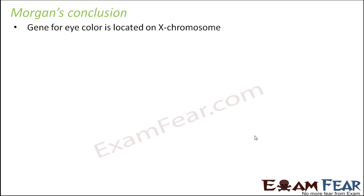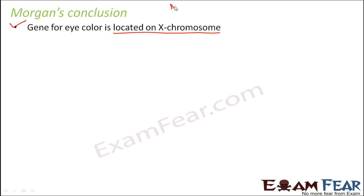Morgan's key conclusion was that the gene for eye color is located on the X chromosome. It was not associated with a particular sex but was related to the sex chromosome specifically.